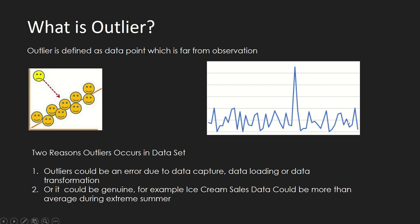The second cause could be because of some business reason. For example, this is an online sales data of a company showing monthly sales. On a particular date there was a promotional offer — 50% discount — and because of that the orders were too high on that day. So this is an outlier, but it's a genuine outlier with business justification.